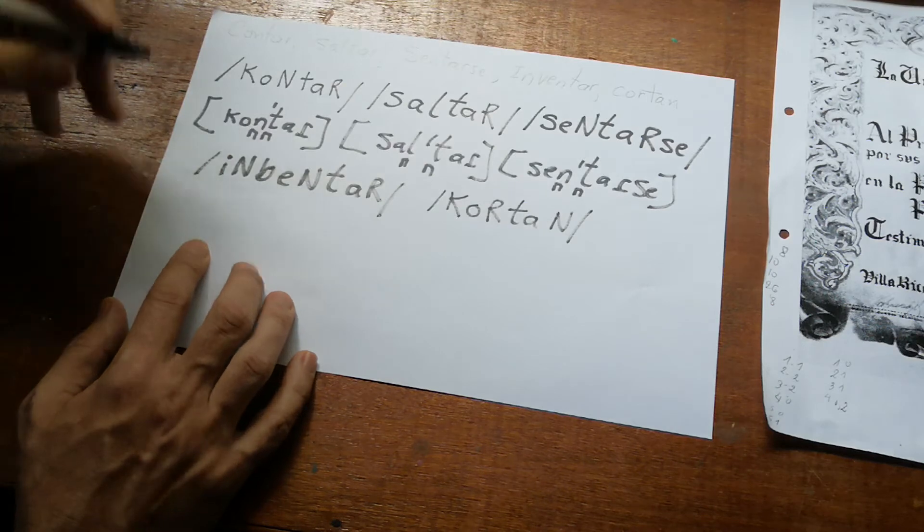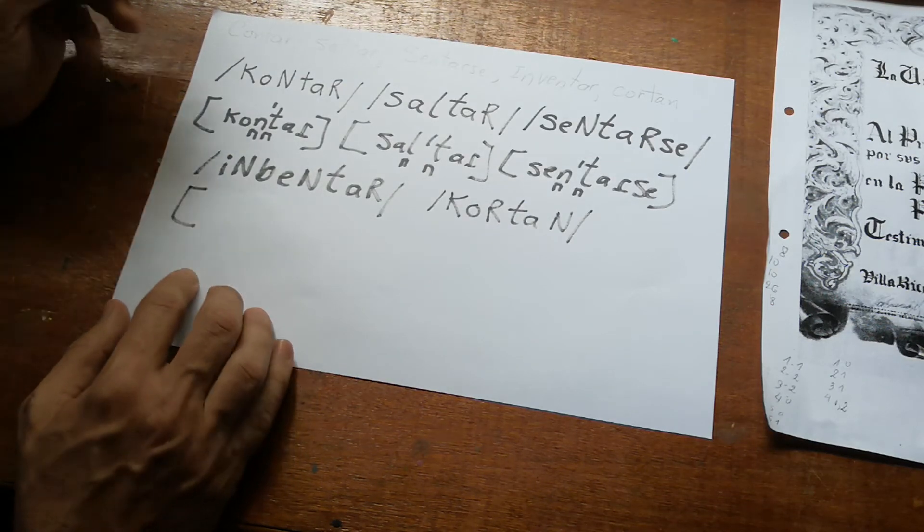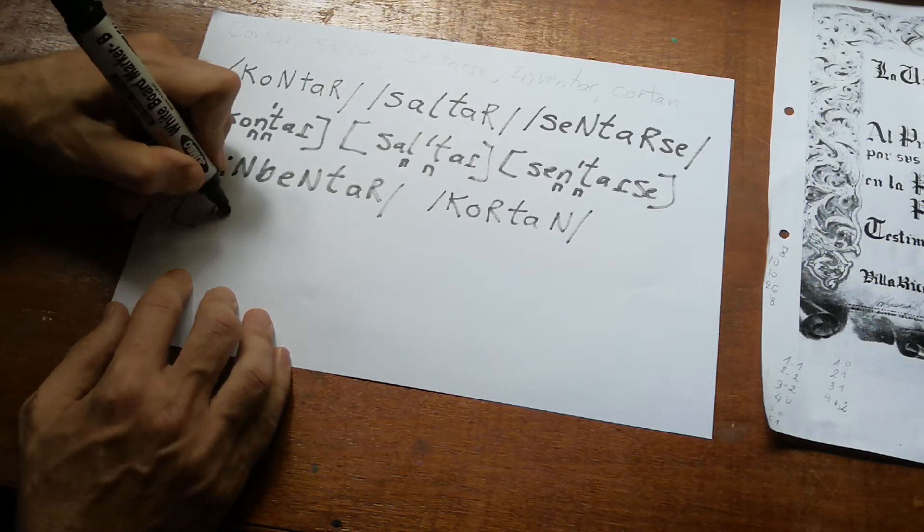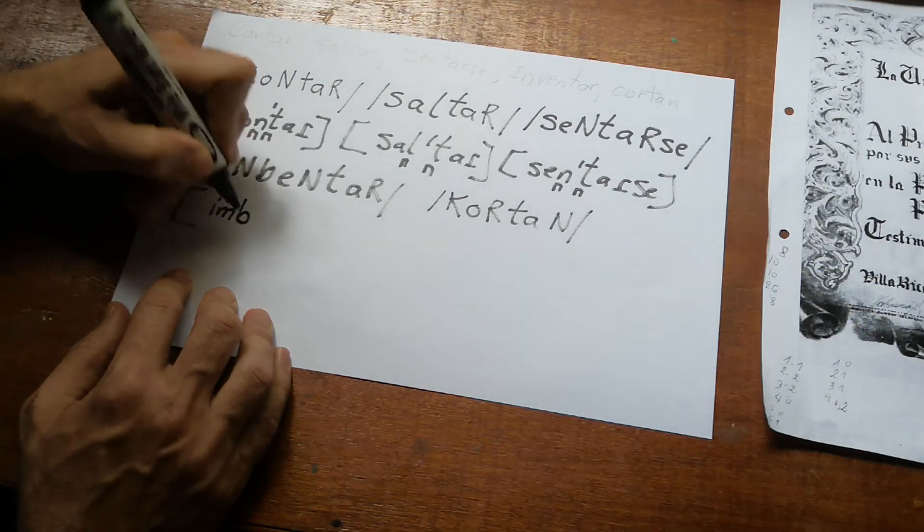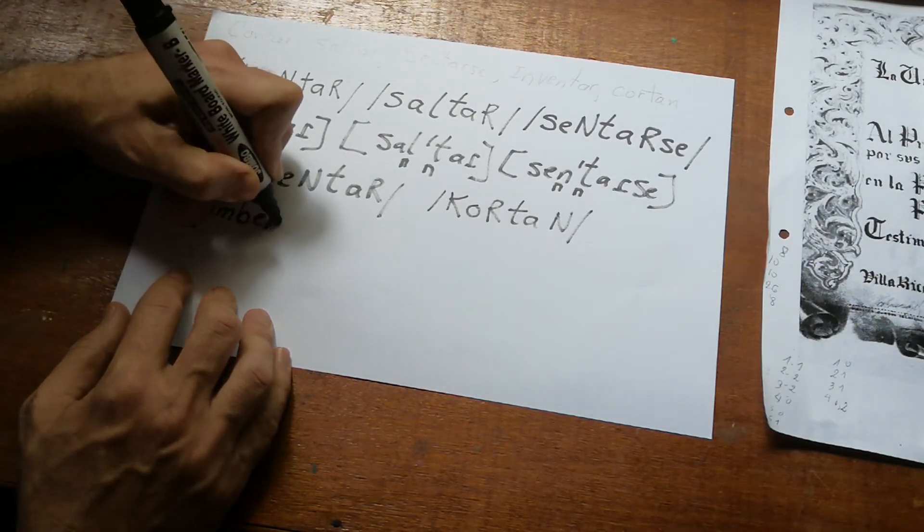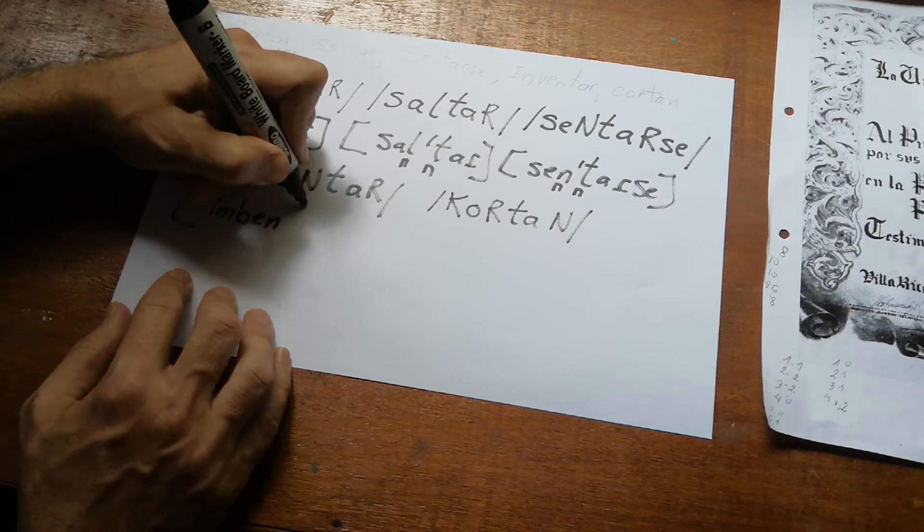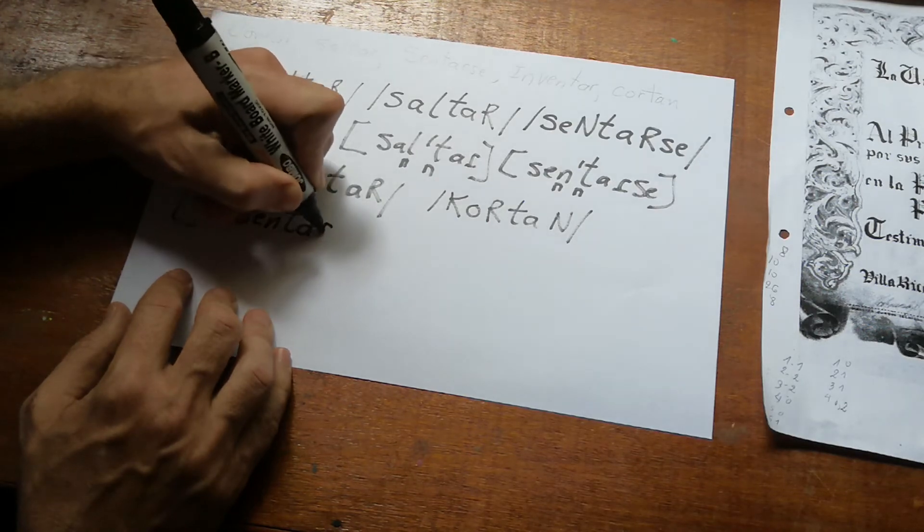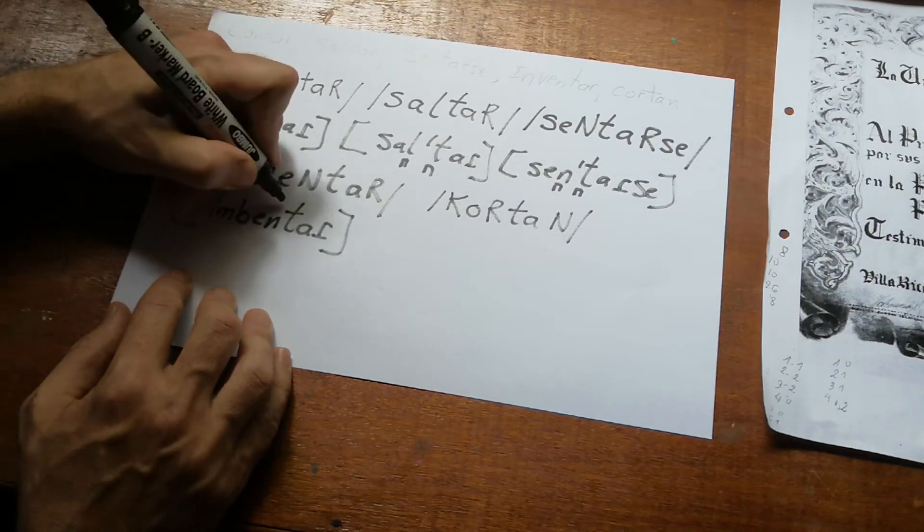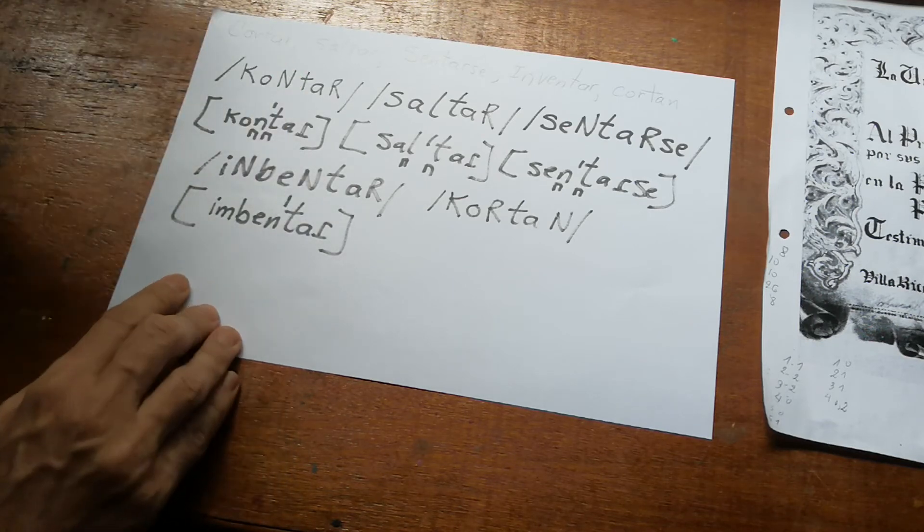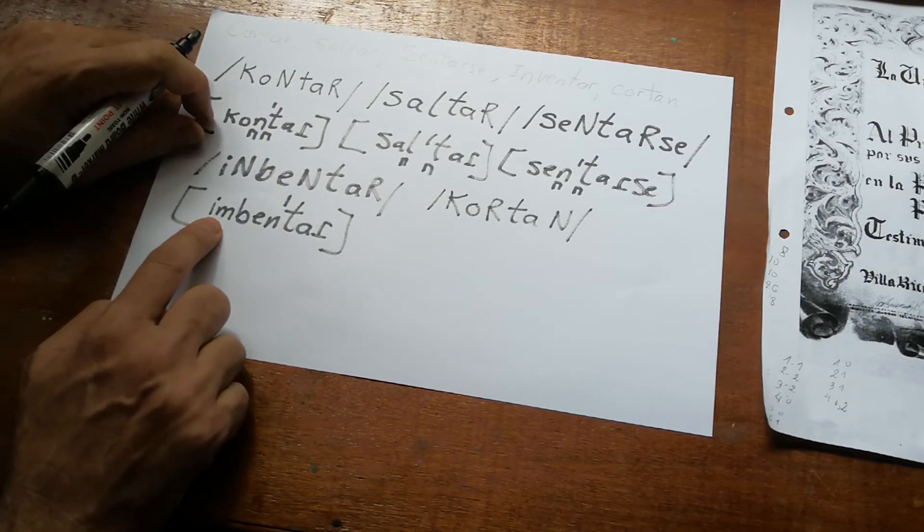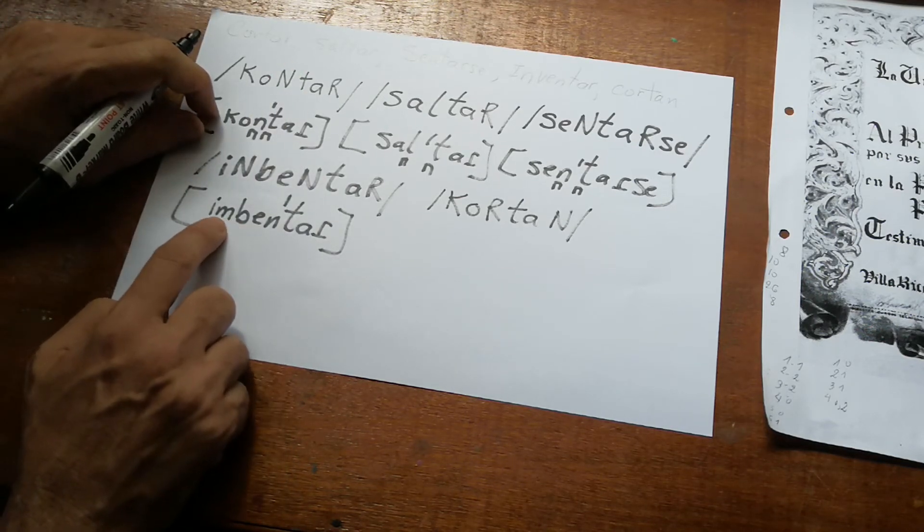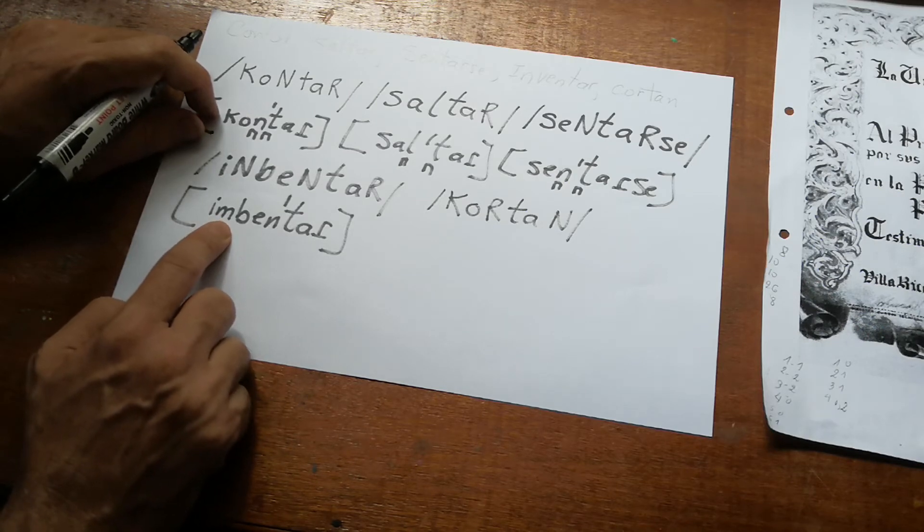So for inventar, the phonetic transcription would be 'in men'. Inventar. Why did I write an M? Because we studied this in primary school: before P or B...